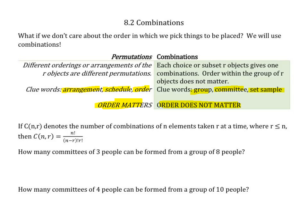The only difference between using a combination instead of a permutation is that the first part of the formula is just like the formula from last time, except we're adding on one little piece. So how many committees of three people can be formed from a group of eight? This time, instead of using P, we're going to use C. I have eight people, and I want to choose three of them.